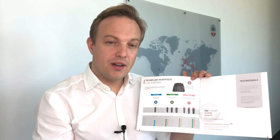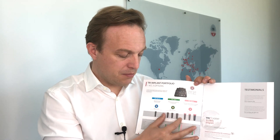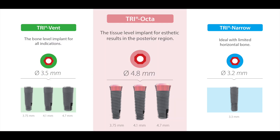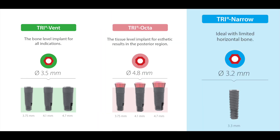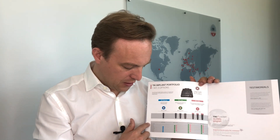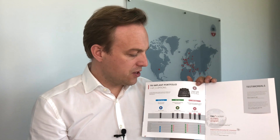Here you have an overview of the simplicity of the system. One surgical kit with which you can place the bone level in 3.7, 4.1, and 4.7 diameter or the tissue level in the same diameters: 3.7, 4.1, and 4.7. We have a special niche implant, the narrow, with 3.3 diameter, and all implants come in lengths of 6.5 to 16 millimeters depending on the type.